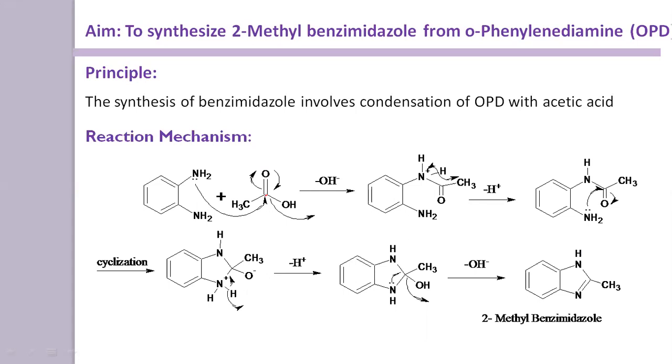And due to that positivity of this carbon, the lone pair of nitrogen gets attracted towards this positively charged carbon atom. And an intermediate gets formed.